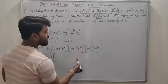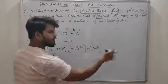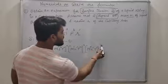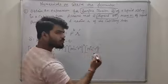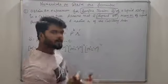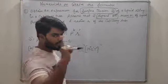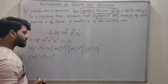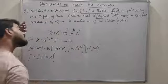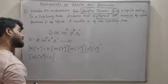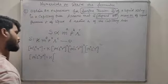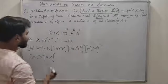यहाँ M raised to power B है, और यहाँ power cancel out हो जाएगी क्योंकि 0 की multiply C से करूँगा तो 0। और किसी की भी power 0 क्या होती है? — 1।